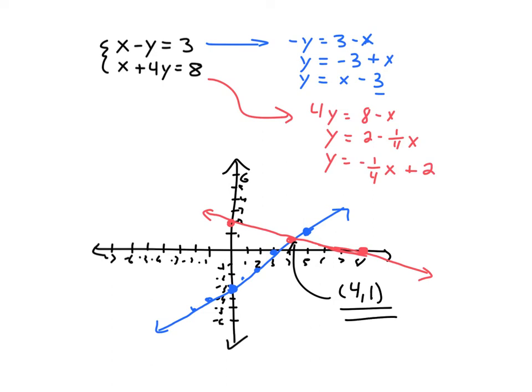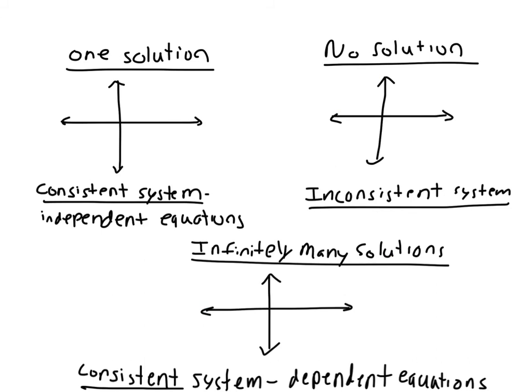So now let's talk a little more generally about what it means to be a solution of a system of linear equations graphically. First case is you could possibly have one solution, and that's going to be like what we just showed. So that's going to be a linear line intersecting with another linear line at exactly one point. So when you intersect at exactly one point, you have one solution.